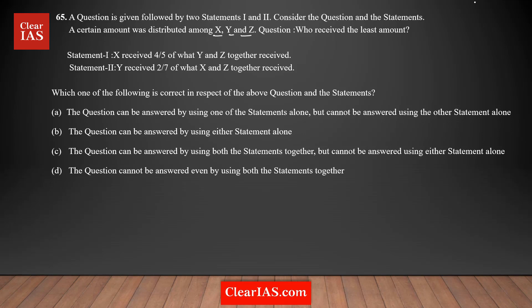It's actually a value-based question. You need to find out, out of the three of them, who received the least amount — a unique answer. If you're getting multiple answers, that means it's not sufficient. I'm going to start with Statement 1 and form an equation. X received 4/5 times of what Y and Z together received. So I'm assuming the amount received by X is X, Y is Y, and Z is Z. The equation from Statement 1 is: X = (4/5)(Y + Z).